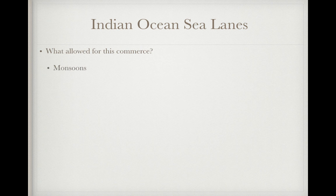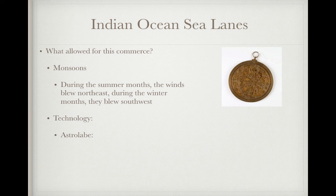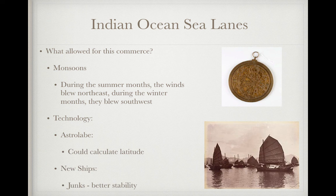So what allowed for this commerce? Monsoons — the understanding of these monsoons is very important. During the summer months, the winds blew northeast; during the winter months, they blew southwest. So people would time their travels along with these monsoons and have the wind aid them. Technology such as the astrolabe was very influential as well — it could help calculate latitude. And new ships such as junks allowed for better stability and better travel.